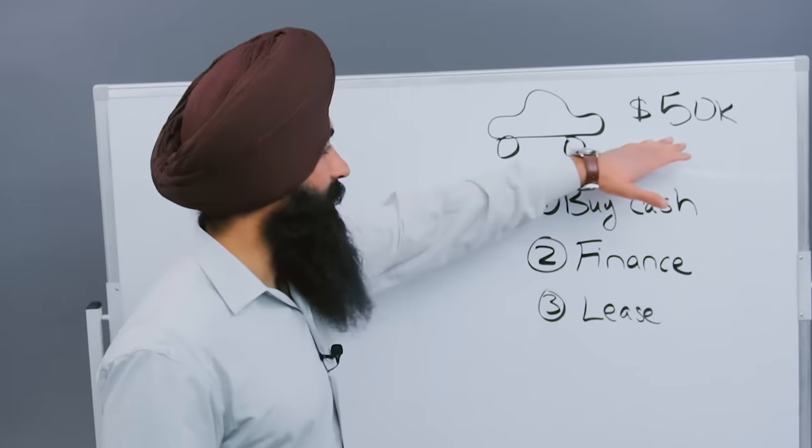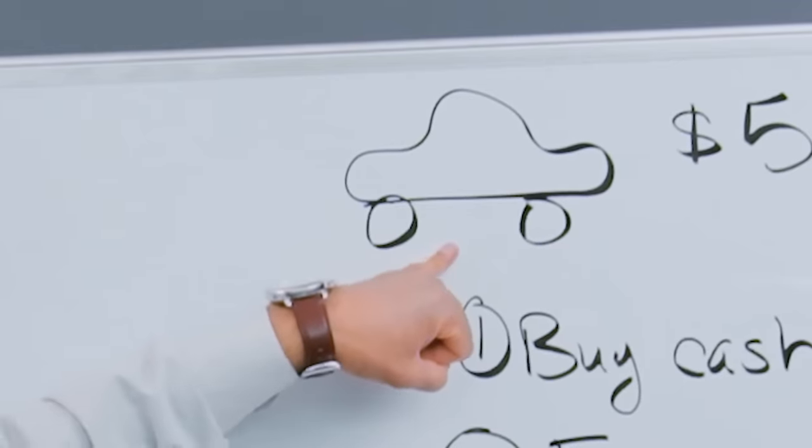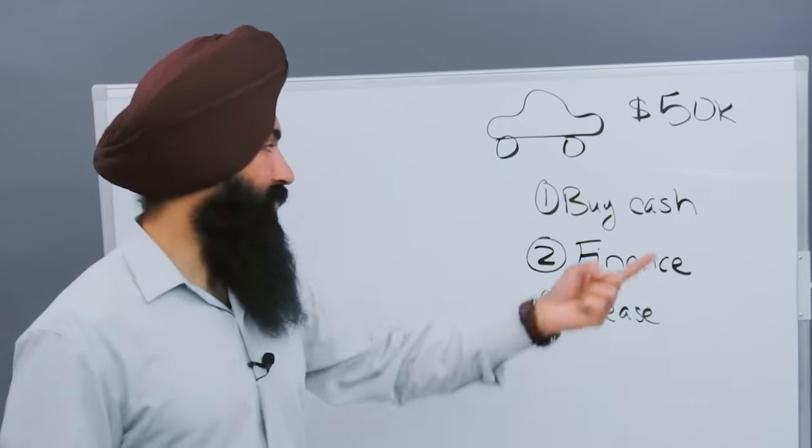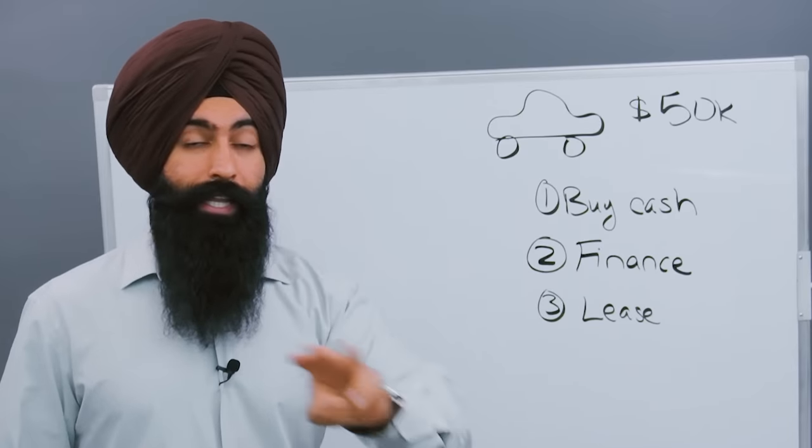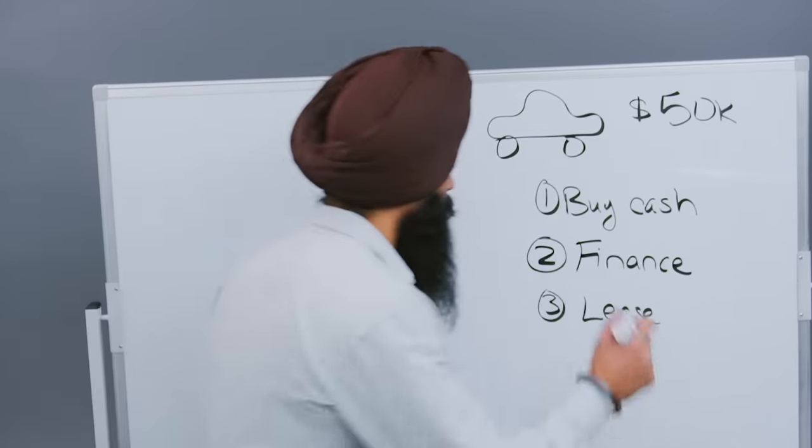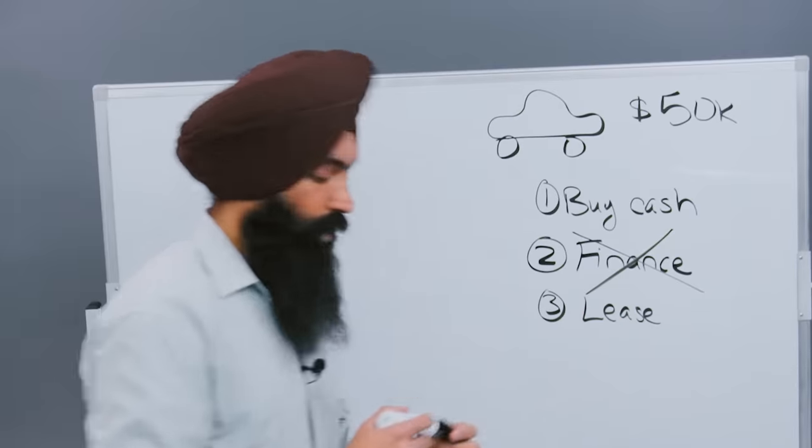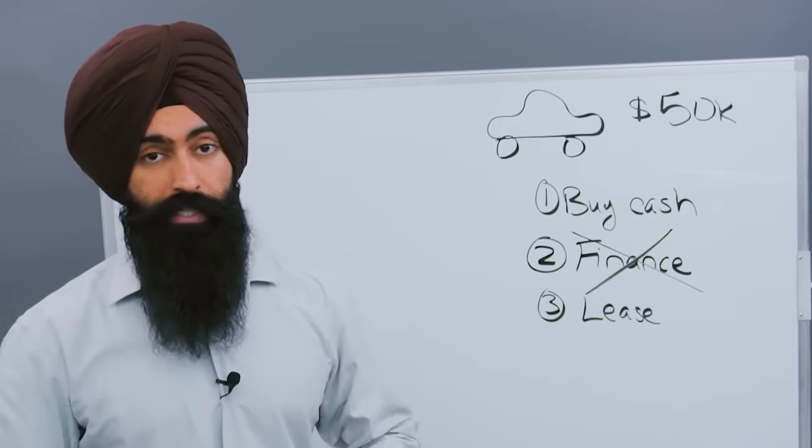If I wanted to get this $50,000 lopsided car that I drew, I have three options. I can buy this car with cash, I can finance the car, or I can lease the car. And the option that I would absolutely avoid is financing the car for three reasons, which I'll explain in just a second.